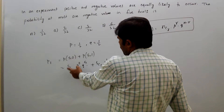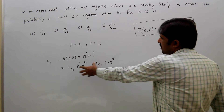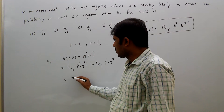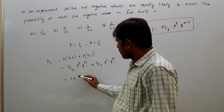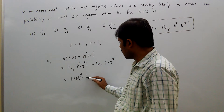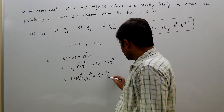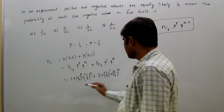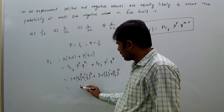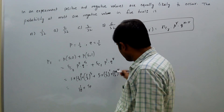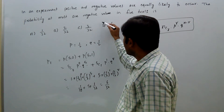Out of five experiments, getting zero negatives probability is 5C0 × (1/2)^0 × (1/2)^5, and getting one negative probability is 5C1 × (1/2)^1 × (1/2)^4. Since (1/2)^0 is 1 and 5C0 is 1, this gives 1/32. Plus 5 × (1/2) × (1/2)^4 = 5/32. That equals 6 by 32. Option D is the correct answer.